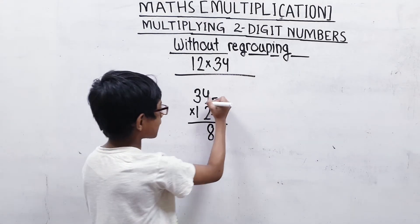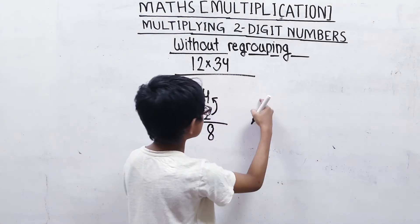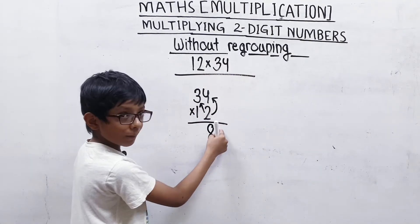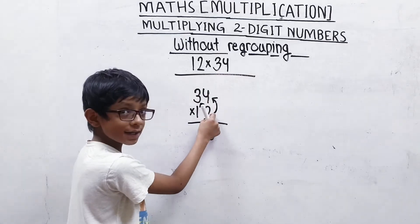And then, we will multiply 3 by 2. Like we do this: 34 multiply by 2. We will do the same. 4 times 2 is 8, and here we will write 3 times 2 is 6.